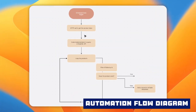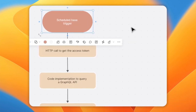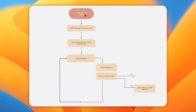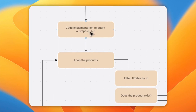I created a small diagram that demonstrates the flow of what we're going to be building. We're going to add a schedule-based trigger set to run once a day at midnight. We're going to do an HTTP call to get the access token for Product Hunt — a simple HTTP call to authenticate and get an access token. We're then going to use that access token to authenticate to their GraphQL API.